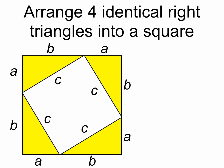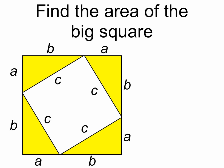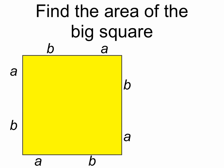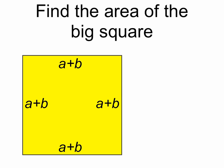So to do this, we're going to arrange four identical right triangles into a square, and we're going to find the area of this larger square two different ways. The first way is just to treat it as a large square with side length a plus b, so its area is a plus b squared. Done.